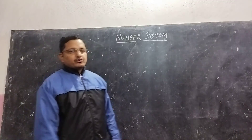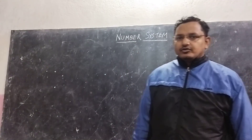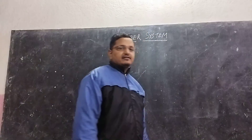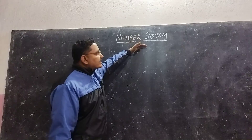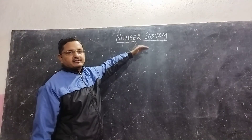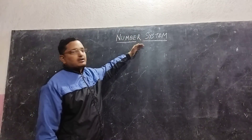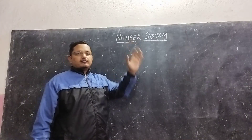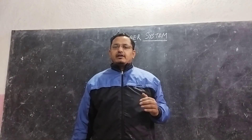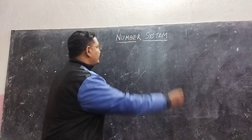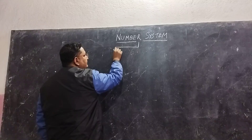Today I will explain about the number system. What is the number system and what parts are there in it? When we were in class 5 and 6, we used to learn about even numbers, composite numbers, odd numbers, co-prime numbers, and all about that. After that, we are going to learn about various different types of numbers.